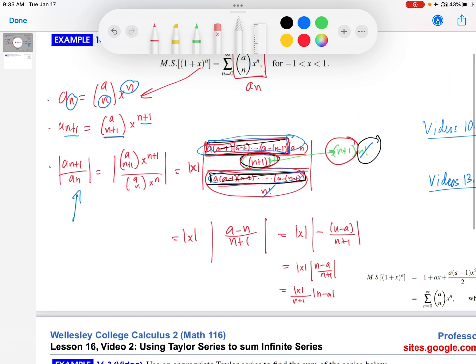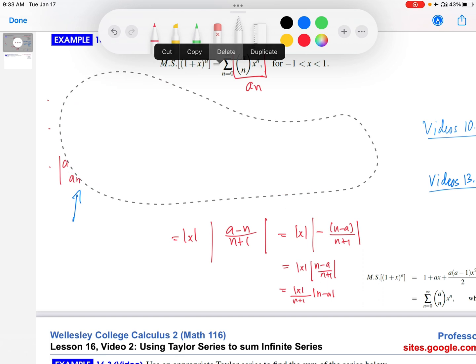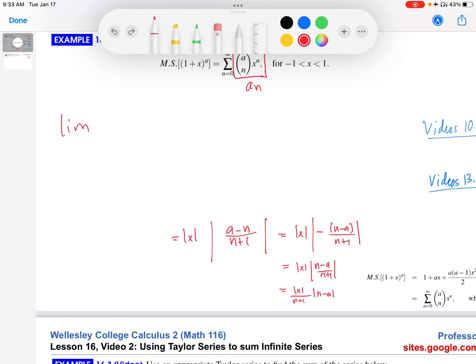The last step in the ratio test, therefore, is to take the limit as n goes to infinity of this absolute value of ratio of successive terms. So limit as n goes to infinity, absolute value of a n plus 1 over a n. And then that's everything down here. So we have limit as n goes to infinity of absolute value of x over n plus 1, absolute value of n minus a. The absolute value of x pulls out to the outside, doesn't have an n in it. So it doesn't change as n goes to infinity, which is what we're looking for in the limit. So now we're just left calculating this.